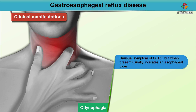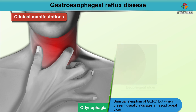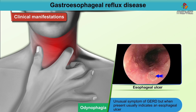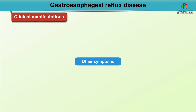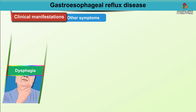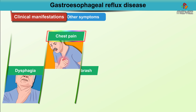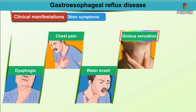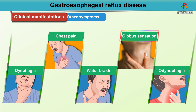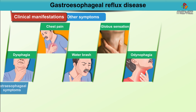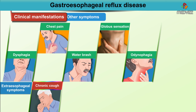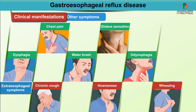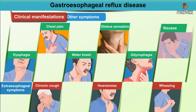Odynophagia is an unusual symptom of GERD but when present usually indicates an esophageal ulcer. Other symptoms of GERD include dysphagia, chest pain, water brash, globus sensation, and odynophagia. Extra-esophageal symptoms include chronic cough, hoarseness, wheezing, and infrequently nausea.